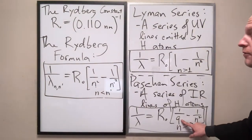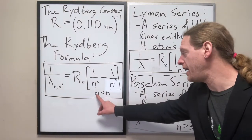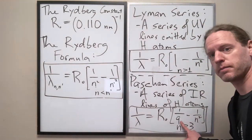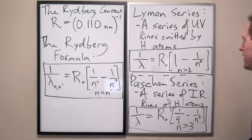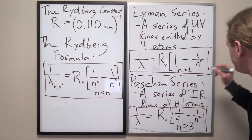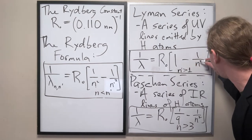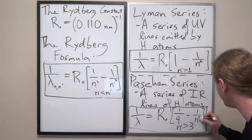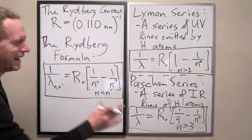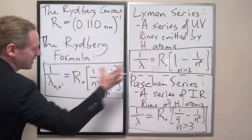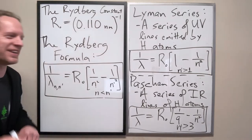Same thing there. In this case for the Paschen series we had n being 3, n prime is anything greater than 3. Now my OCD is kind of hurting me a little bit here, so just to make it entirely consistent I am going to put n prime there. Now it matches up, so I hope you see why I did that.